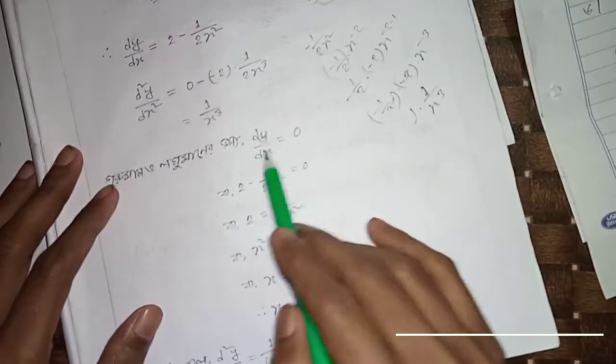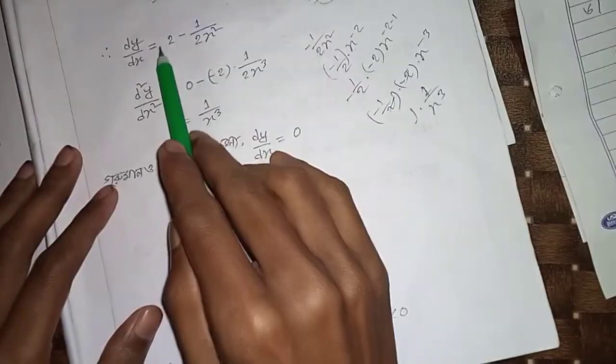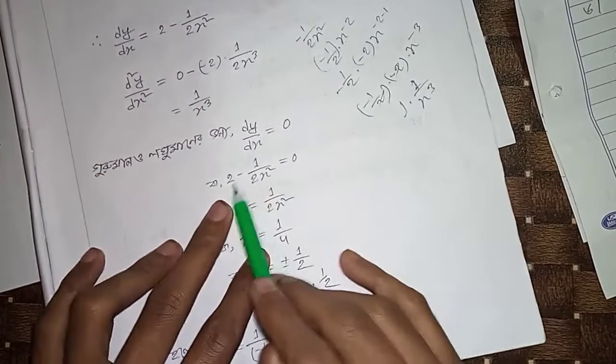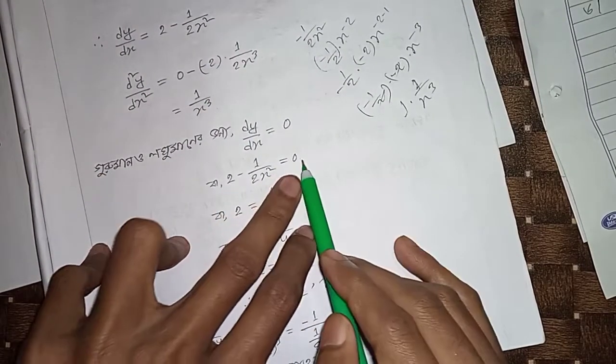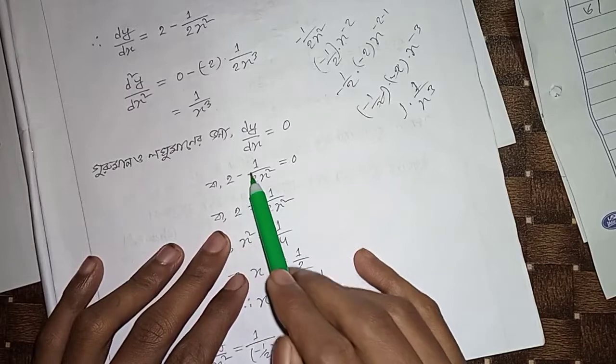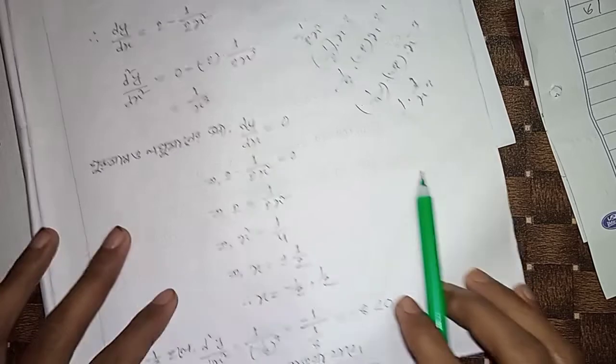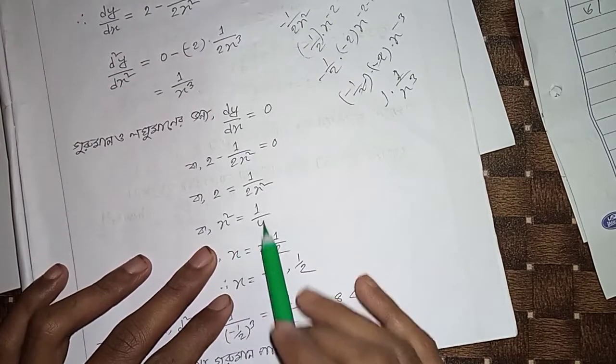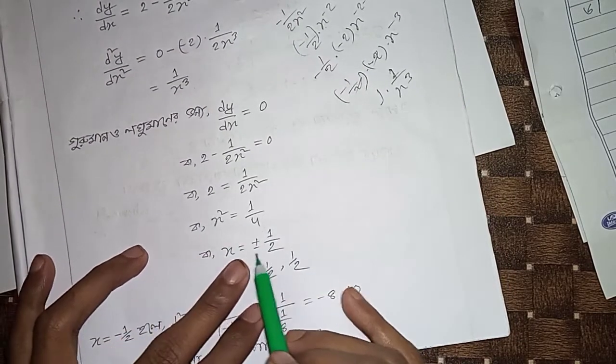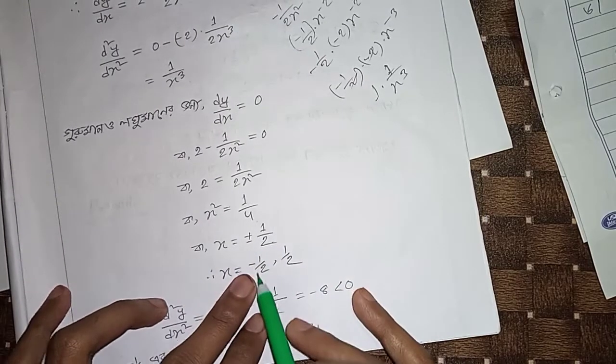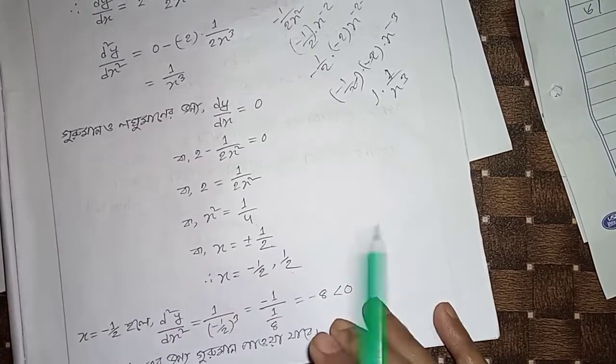To find critical points, set dy/dx equals zero: 2 minus 1/(2x²) equals zero. Therefore 1/(2x²) equals 2, so x² equals 1/4, giving x equals plus or minus 1/2.